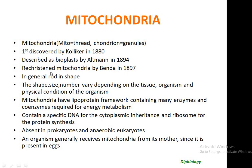In general, mitochondria is rod-shaped, but spherical forms are also available in sperm and problems of some organisms. The shape, size, and number vary depending on the tissue, organism, and physical condition. The activity of the cell is the main criterion for the distribution of mitochondria; for example, in liver cells they form about 30 to 35 percent of the cell protein, while in kidney cells they form about only 20 percent.